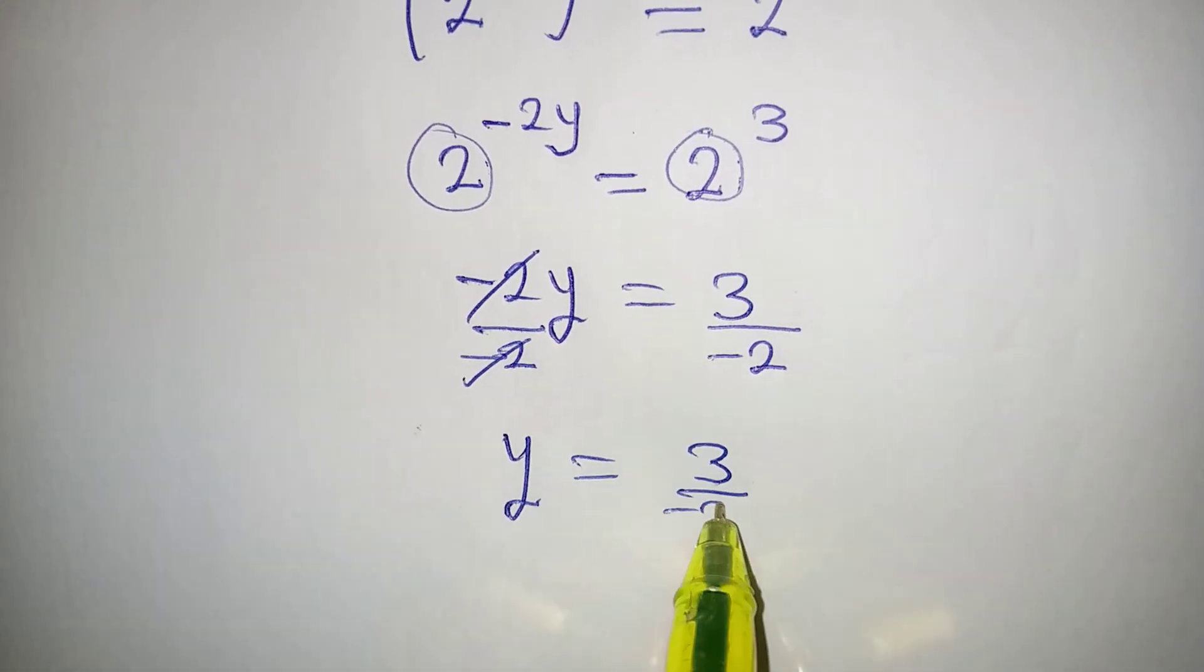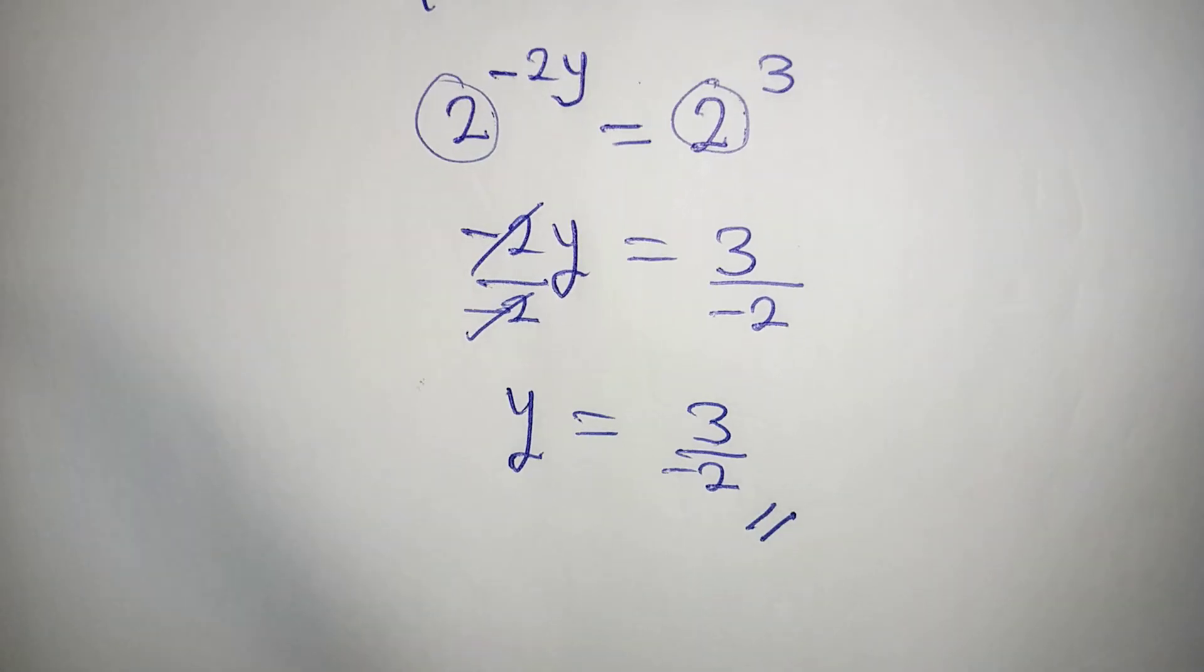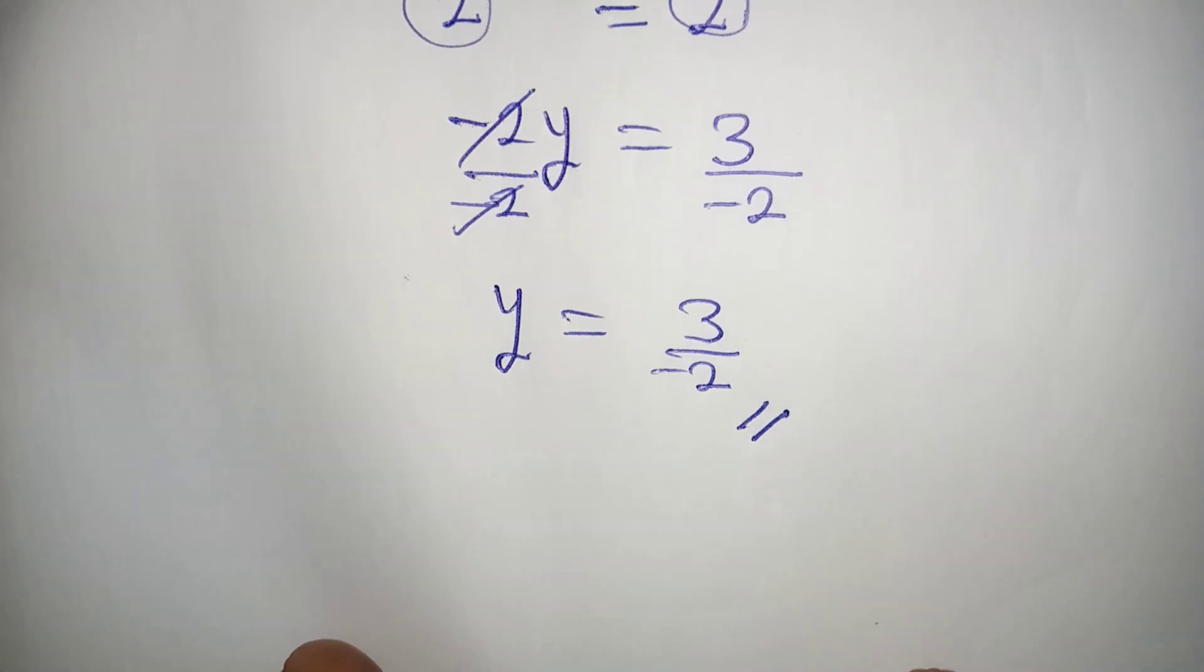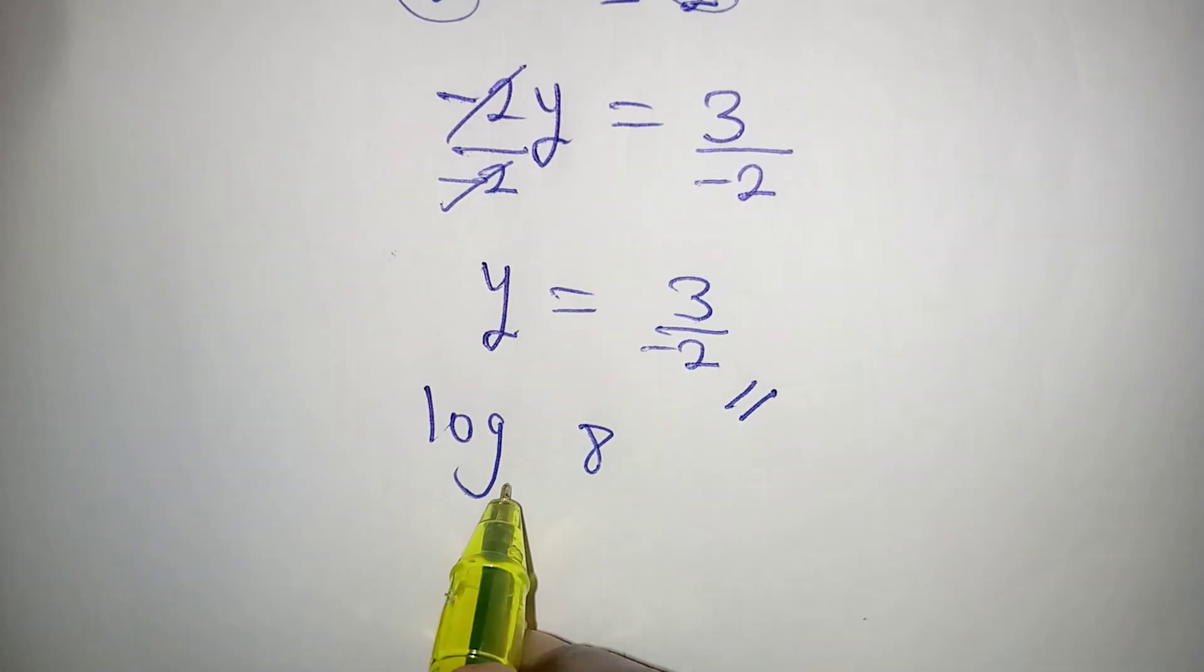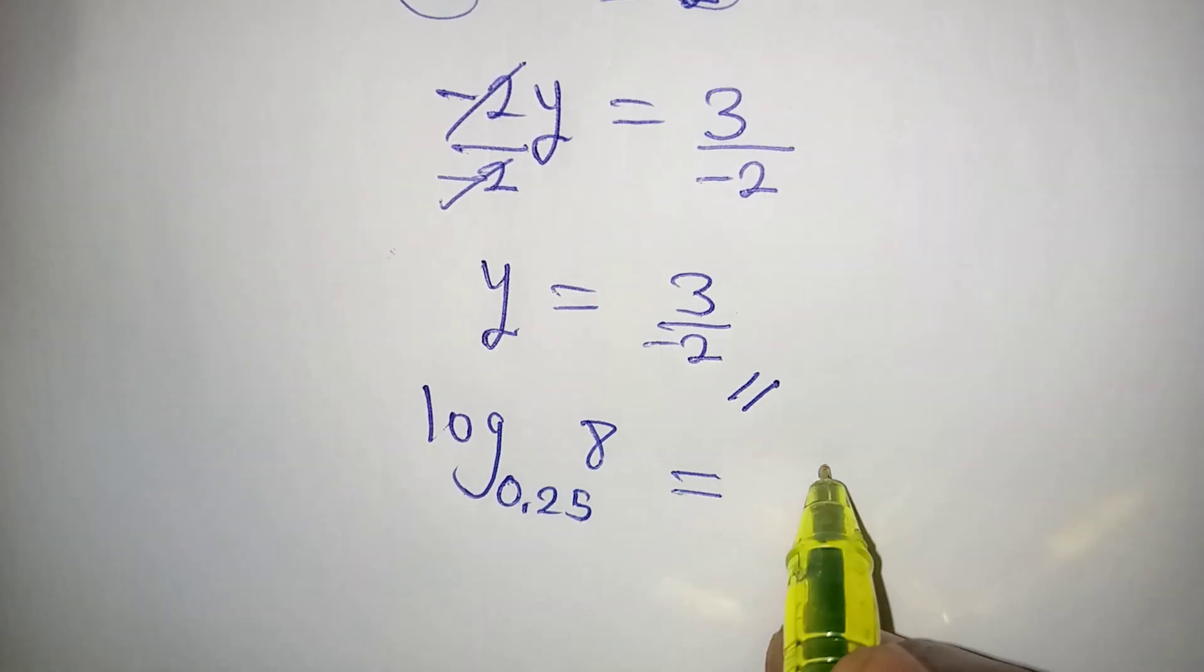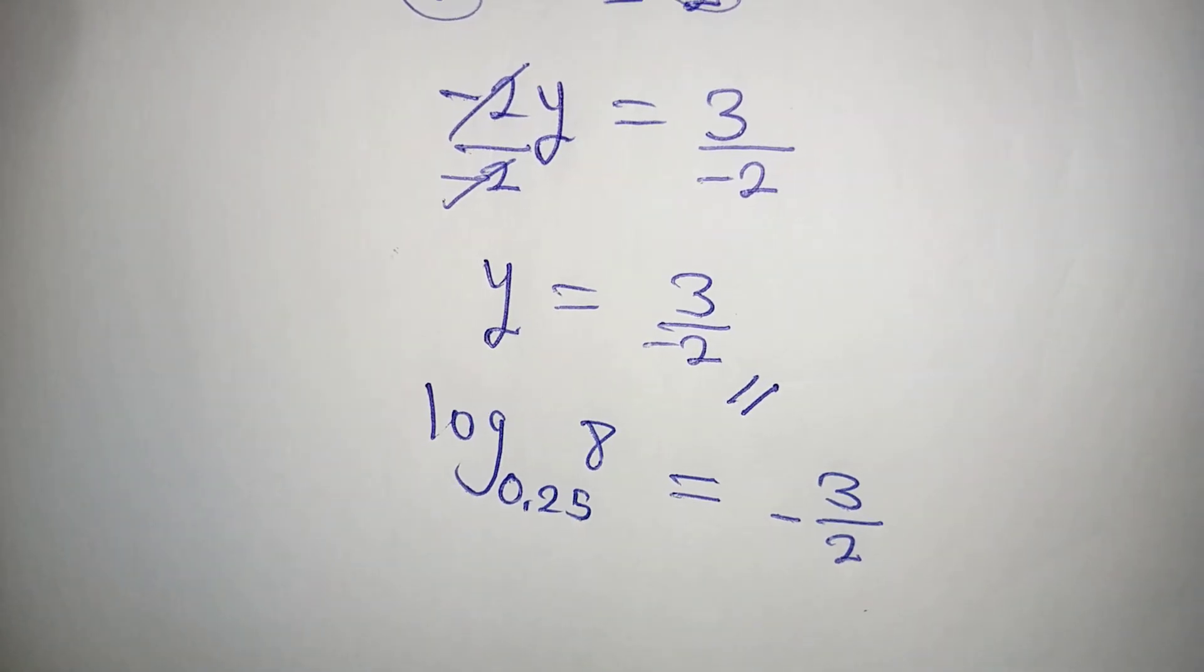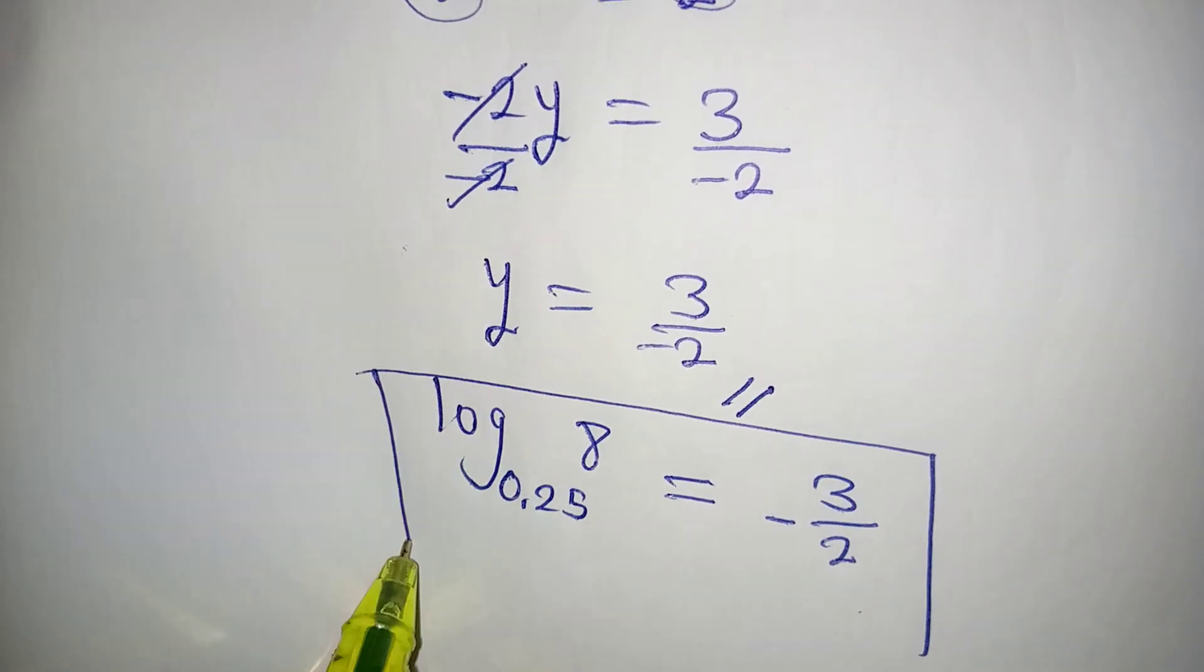So this is the value of y that we have in the problem. But remember, this also means that log 8 to the base of 0.25 is equal to negative 3 over 2. Thank you for watching, and if you love this video, share this to more of your friends.